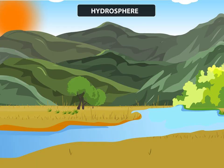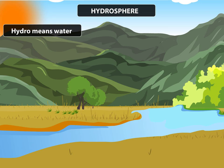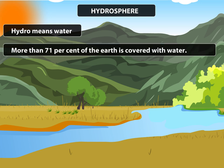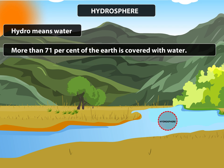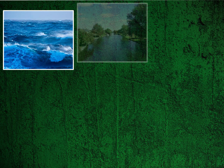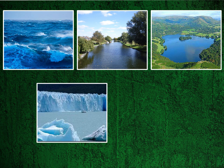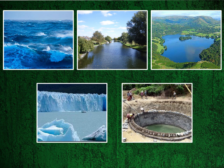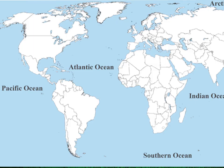The second major domain is Hydrosphere. Hydro means water. More than 71% of the Earth is covered with water. On Earth, water is in the form of oceans, rivers, lakes, glaciers, underground water and vapour in atmosphere. Oceans are the major part of Hydrosphere. The four major oceans are the Pacific Ocean and the Atlantic Ocean.